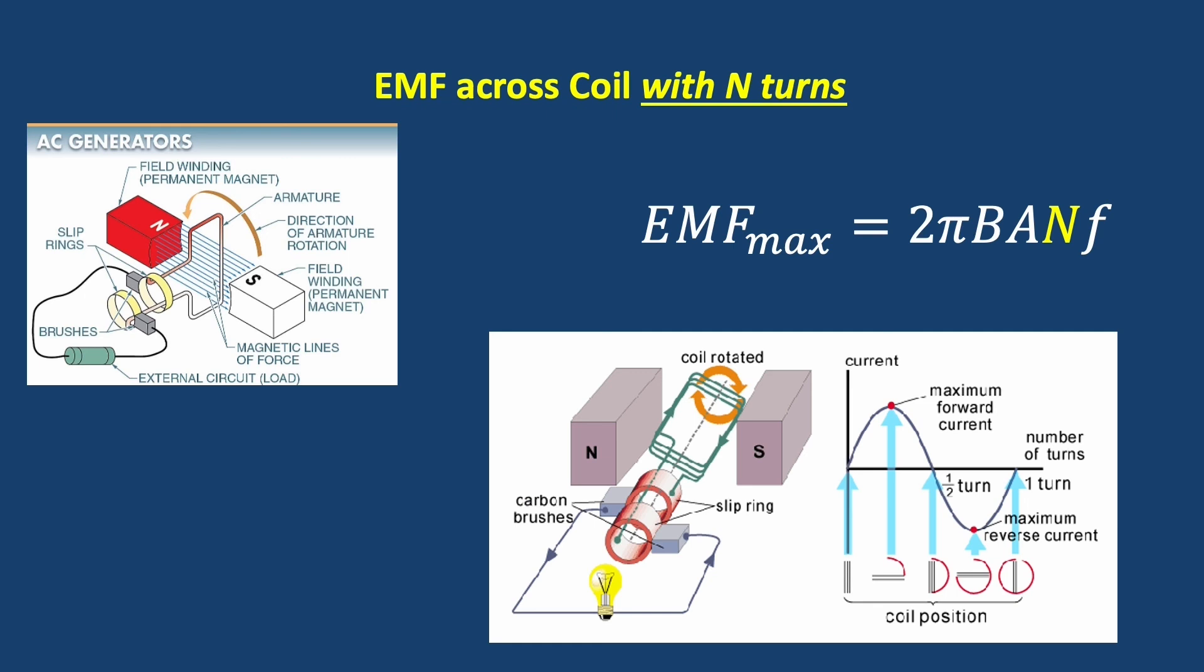2πBANf is a very convenient equation for finding the maximum EMF generated by a simple AC generator. The A part of 2πBANf provides a little bit of an advantage to us because even if our rotating coil is not a nice convenient rectangle like we've had in this example, provided we know the cross-sectional area of the coil, we can still use this equation to find the maximum EMF.